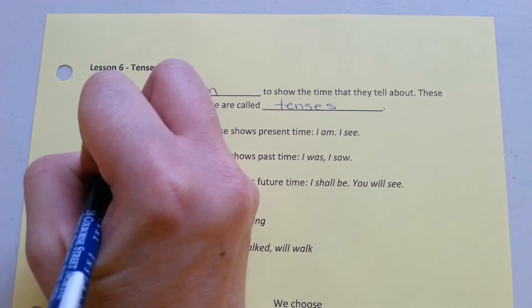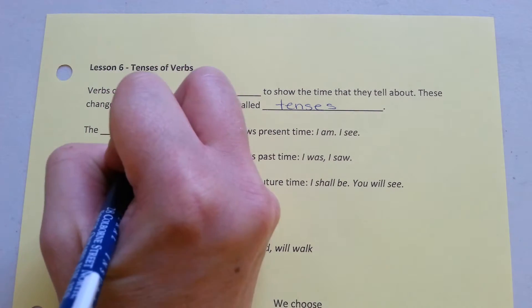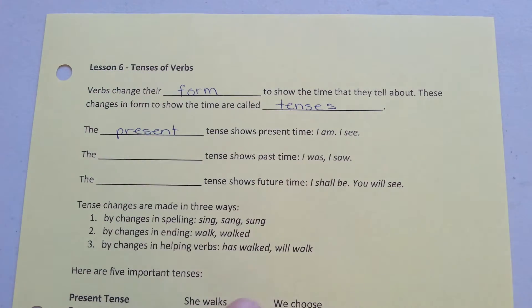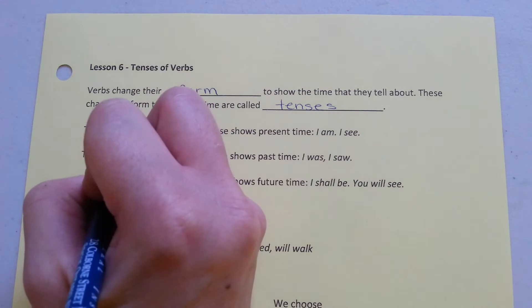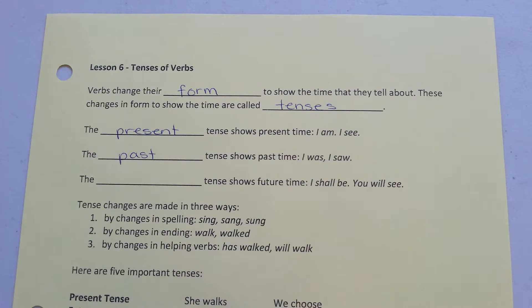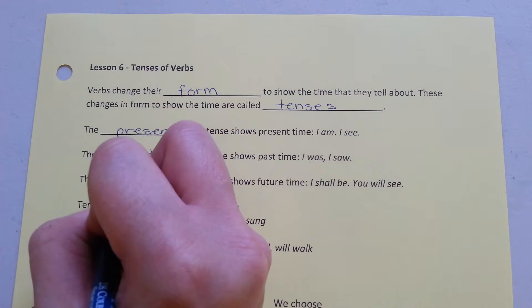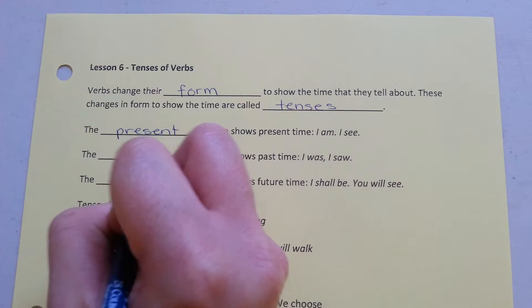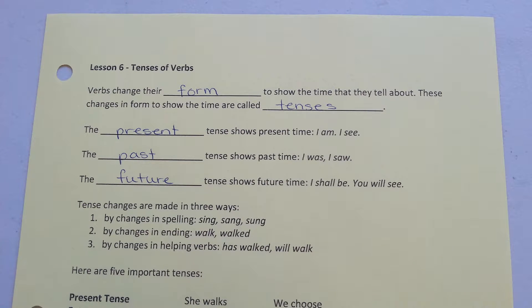The present tense shows the present time: I am, I see. The past tense shows past time: I was, I saw. The future tense shows future time: I shall be, you will see.